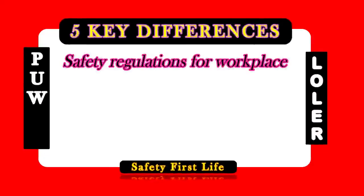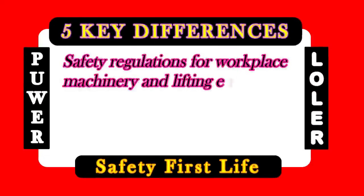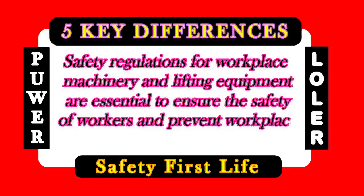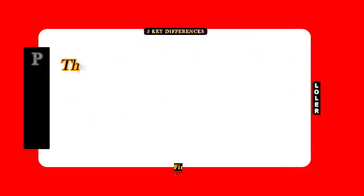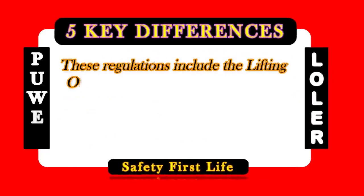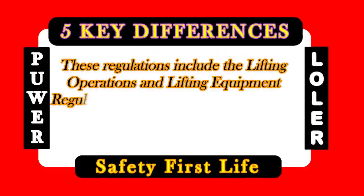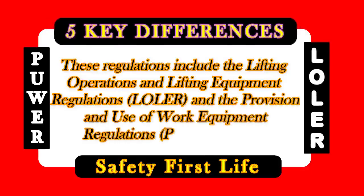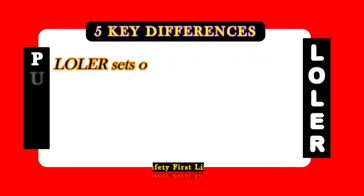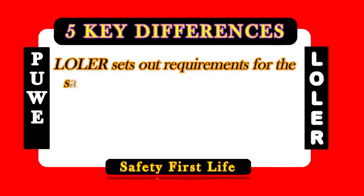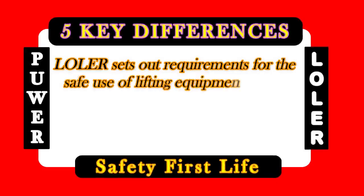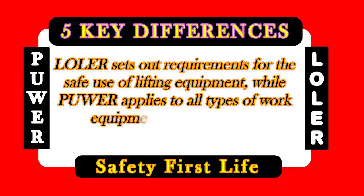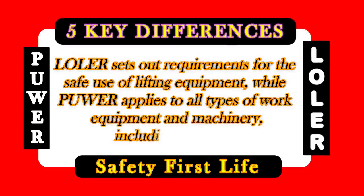Safety regulations for workplace machinery and lifting equipment are essential to ensure the safety of workers and prevent workplace incidents and accidents. These regulations include the Lifting Operations and Lifting Equipment Regulations (LOLER) and the Provision and Use of Work Equipment Regulations (PUWER). LOLER sets out requirements for the safe use of lifting equipment, while PUWER applies to all types of work equipment and machinery, including Mobile Elevated Work Platforms.